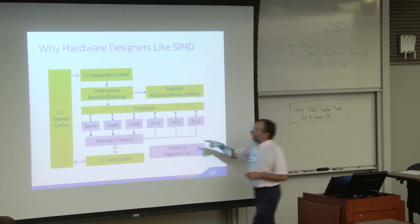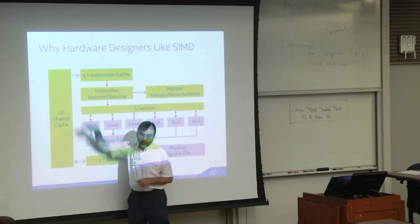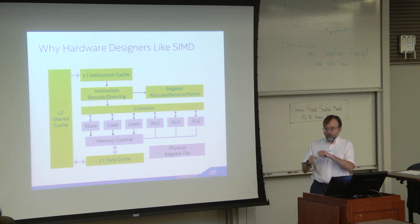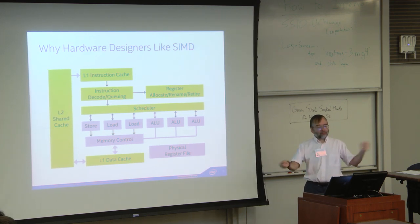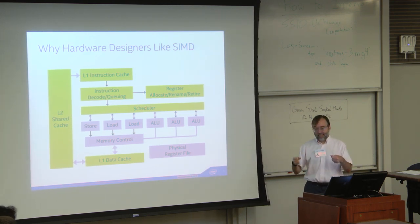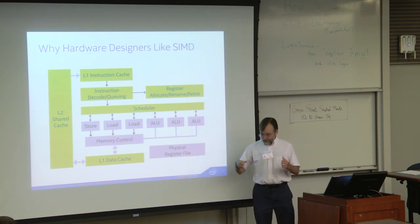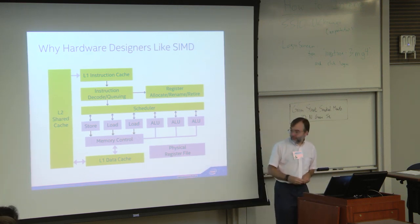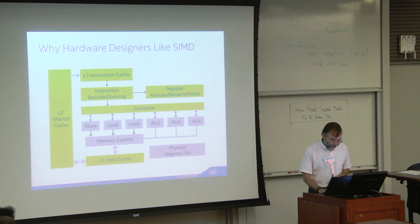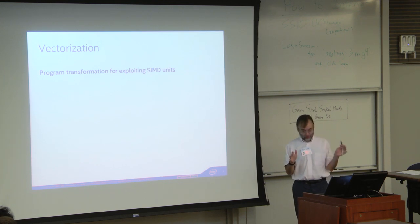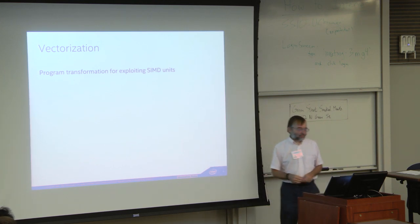Furthermore, some other boxes get hidden benefits, like the caches. If you did an equivalent design with a bunch of separate program counters giving you the equivalent width of a SIMD processor, those program counters might be bouncing all over different parts of the program, pulling in different data into the caches. When the cache gets full, it has to evict something, so those threads fight each other for the cache. With a single thread, it's pulling in data that's usually very close together, happily sharing the cache.